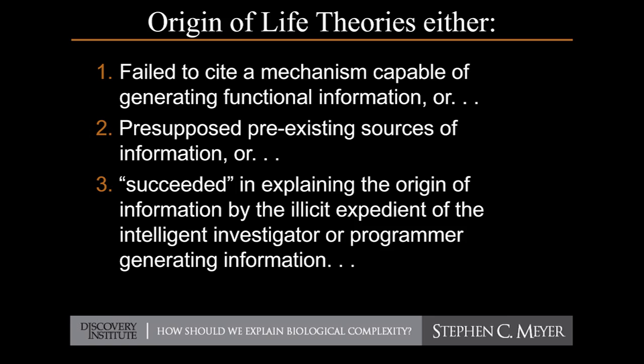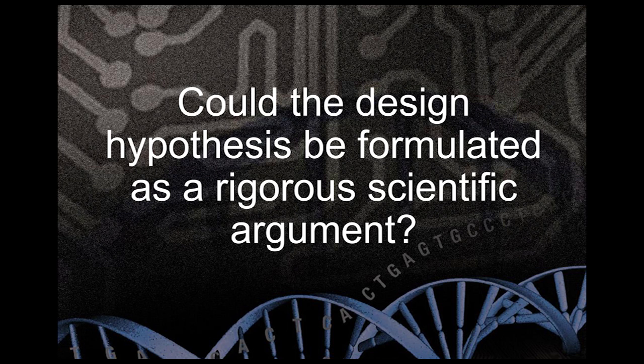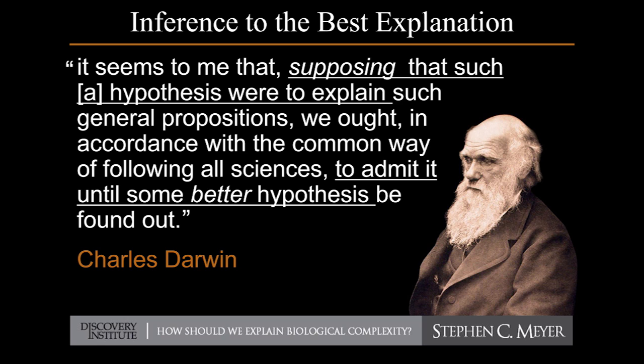I began to think about whether another approach could be taken — the idea that the information in DNA was the product of an intelligence, a mind. Intuitively, there's an obvious connection: Bill Gates says software is like DNA, and we know software programs come from programmers, not from wind, erosion, or random number generators. That led me to study the works of Charles Darwin — not only a great evolutionary biologist, but a pioneer in the application of a method of historical scientific investigation called the method of multiple competing hypotheses, or inference to the best explanation.